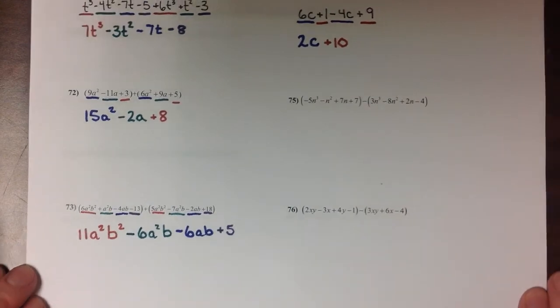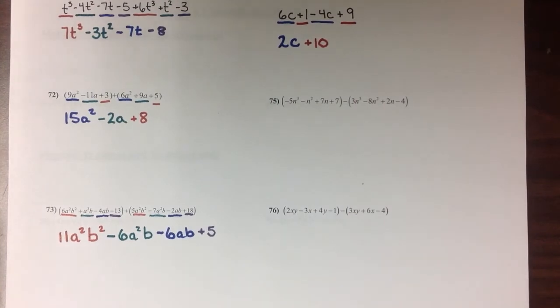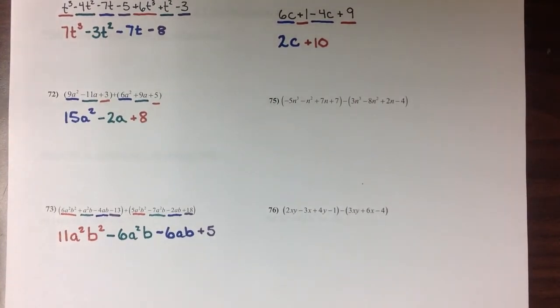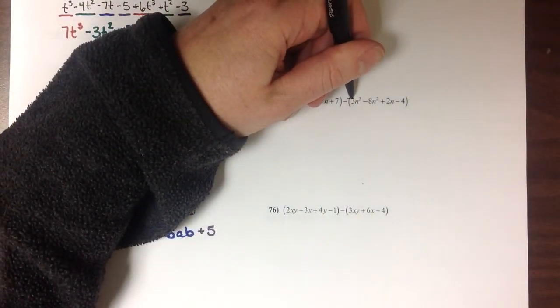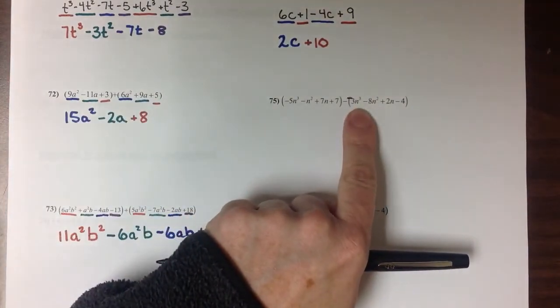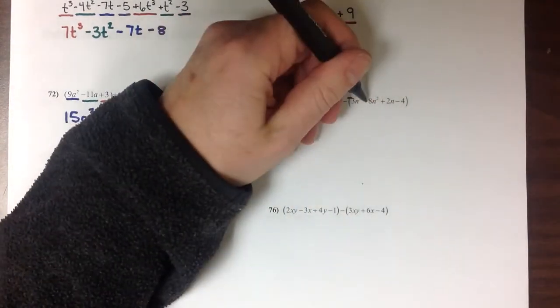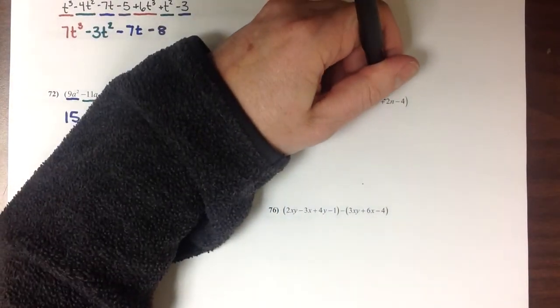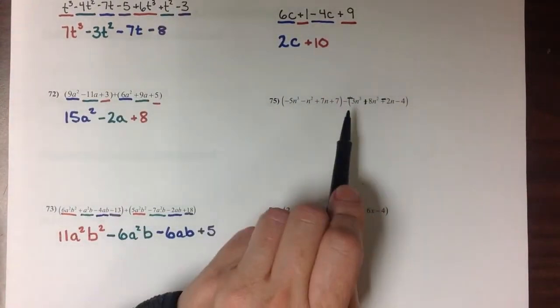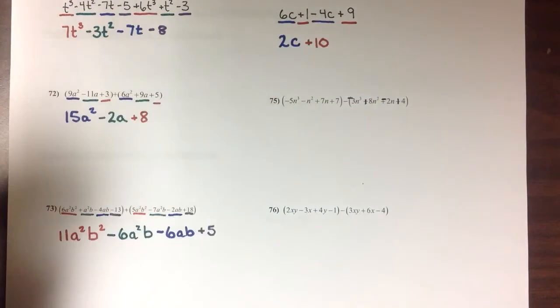It looks like I did these a little out of order. I guess I meant to do all the adding first and then all the subtracting. But I think we'll be okay. So if I look at this shortcut method with this subtraction, I need to make this 3n³ negative. These two negatives are combined to make this a positive. The negative with this positive will make that 2n negative. And another negative with a negative will make that 4 positive.